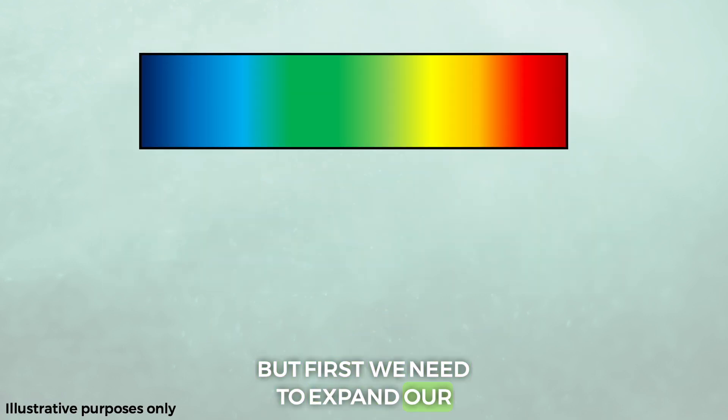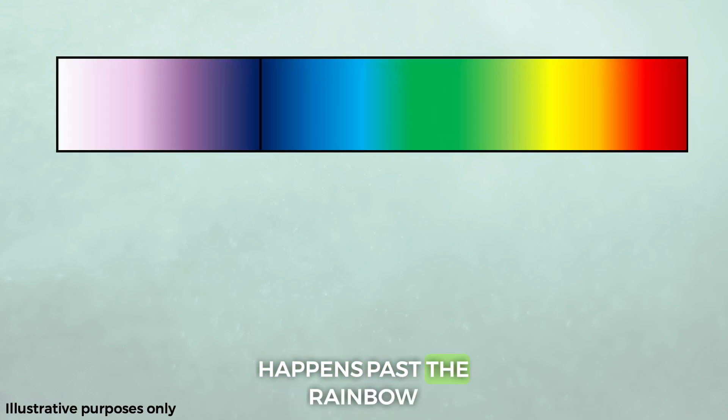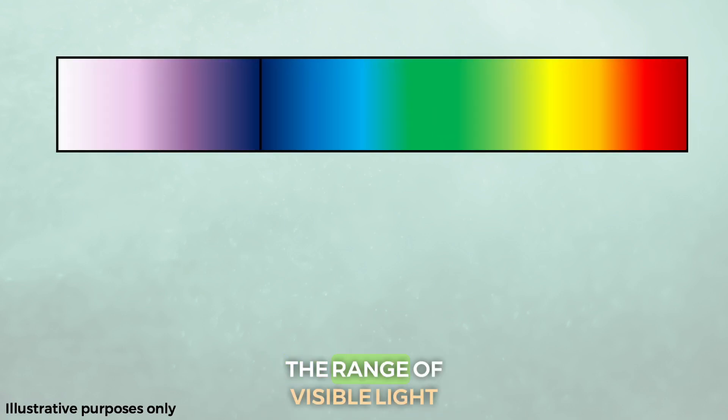This leads me onto a concept I touched on in the last video that raised a few questions. But first we need to expand our view slightly. Instead of just looking at the rainbow of colors from the sun, we need to look at what happens past the rainbow. So now we're going to look at the range of visible light, but also the range of invisible ultraviolet light.